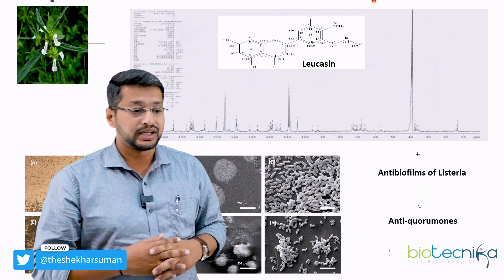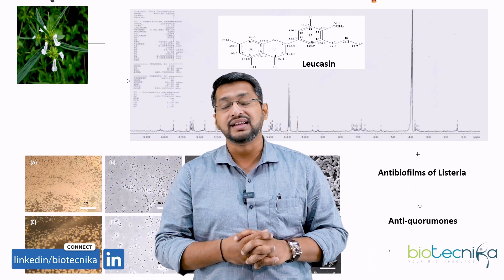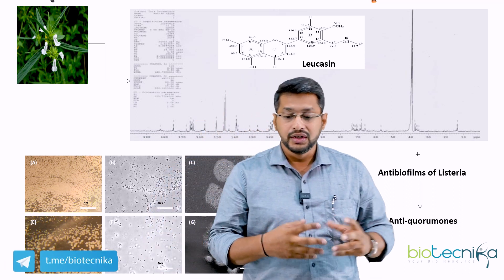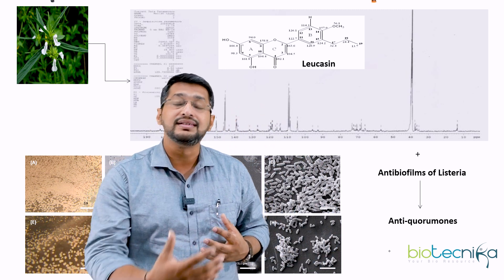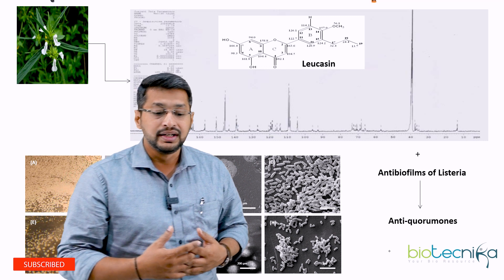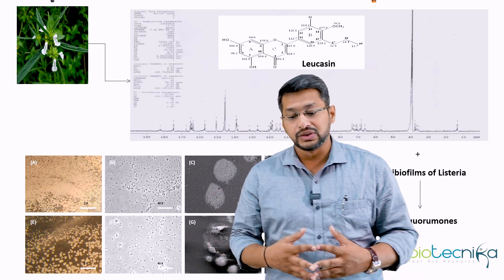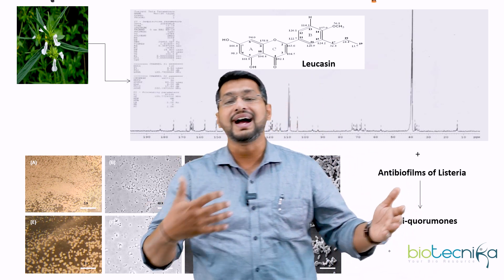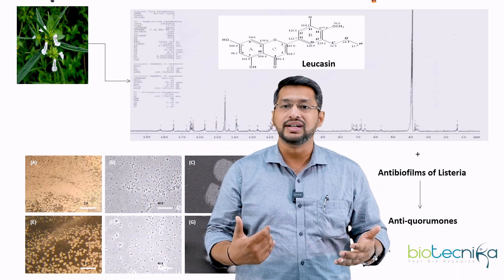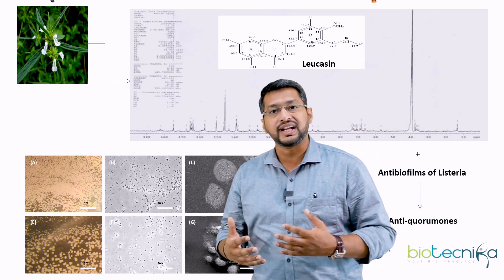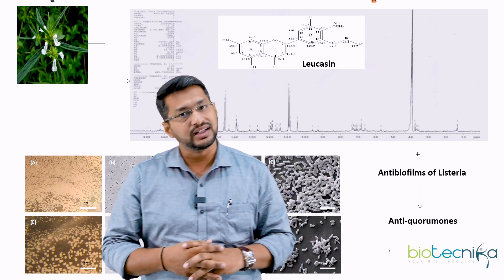Let me take an example: Leucas aspera. In classical Ayurvedic terminology, it is called Tumbe. What we did was isolate certain phyto molecules from Leucas aspera. This molecule is a flavonoid and has been called lucasin. Lucasin was systematically isolated using various solvent degradation methods, and once isolated, all spectroscopic techniques confirmed that the entire structure of the isolated molecule is indeed lucasin.